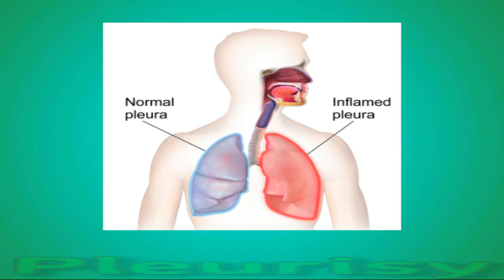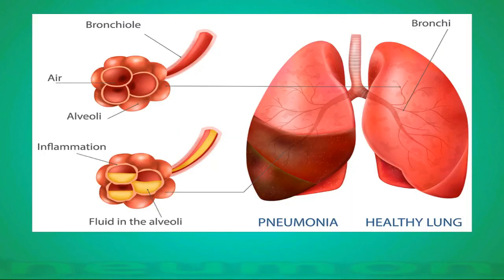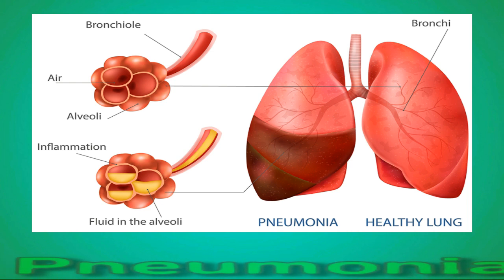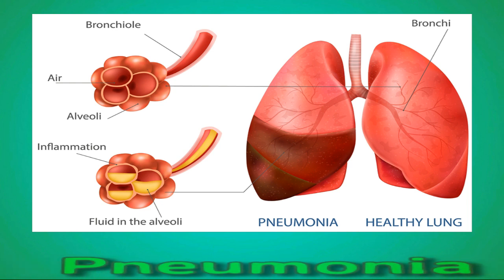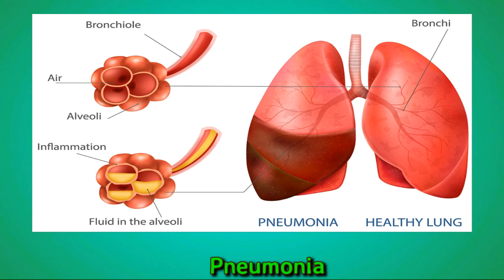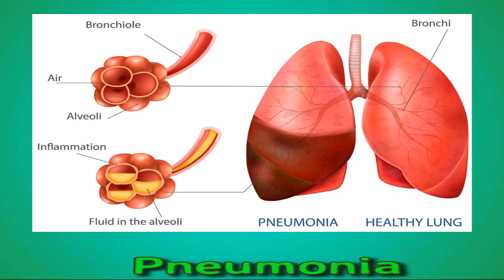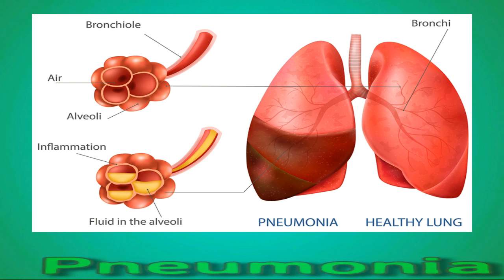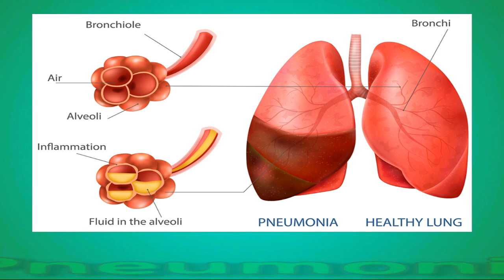Pneumonia is a condition where a person experiences a severe respiratory infection that can affect one or both lungs. If pneumonia affects the left lung, a person may experience pain in the left lung. Additional symptoms might include a cough, fever, chills, and shortness of breath.